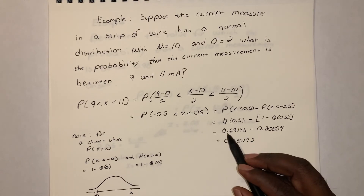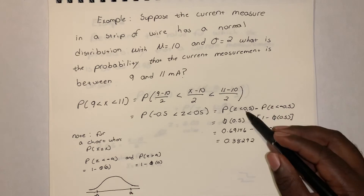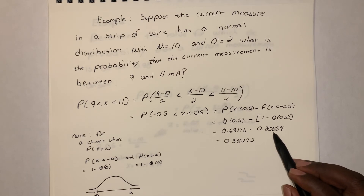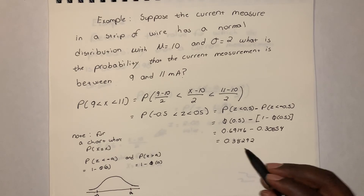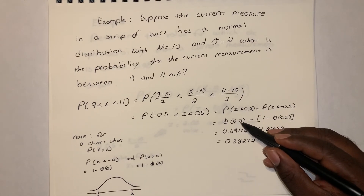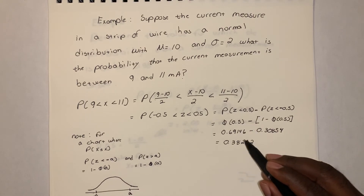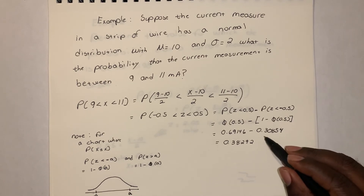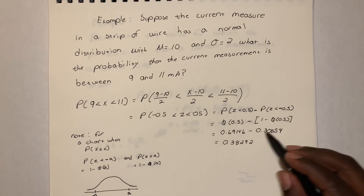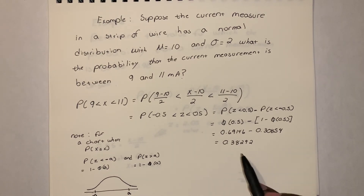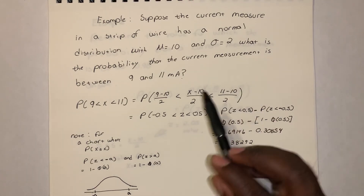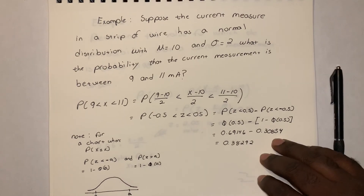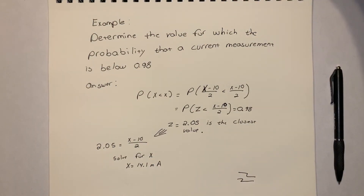Looking up the values: φ(0.5) = 0.69146, so P(Z < −0.5) = 1 − 0.69146 = 0.30854. Subtracting: 0.69146 − 0.30854 = 0.38292. So the probability that the current measurement is between 9 and 11 milliamps is approximately 0.3829.